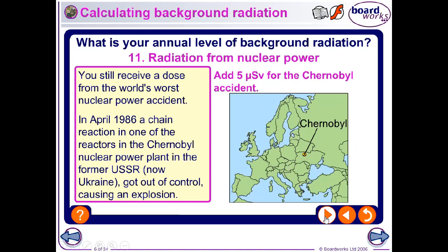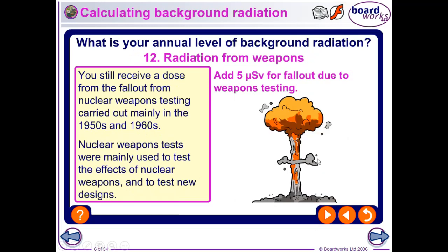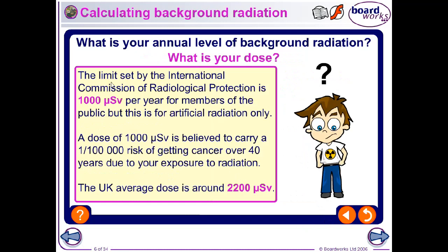Historical accidents like Chernobyl contribute an extra five micro sieverts per year today, and nuclear weapons tests from the 1950s to around 2000 add another five micro sieverts. The limit set by radiological protection is about 1000 micro sieverts per year, and each additional 1000 micro sieverts carries a one in 100,000 risk of getting cancer over 40 years of exposure.